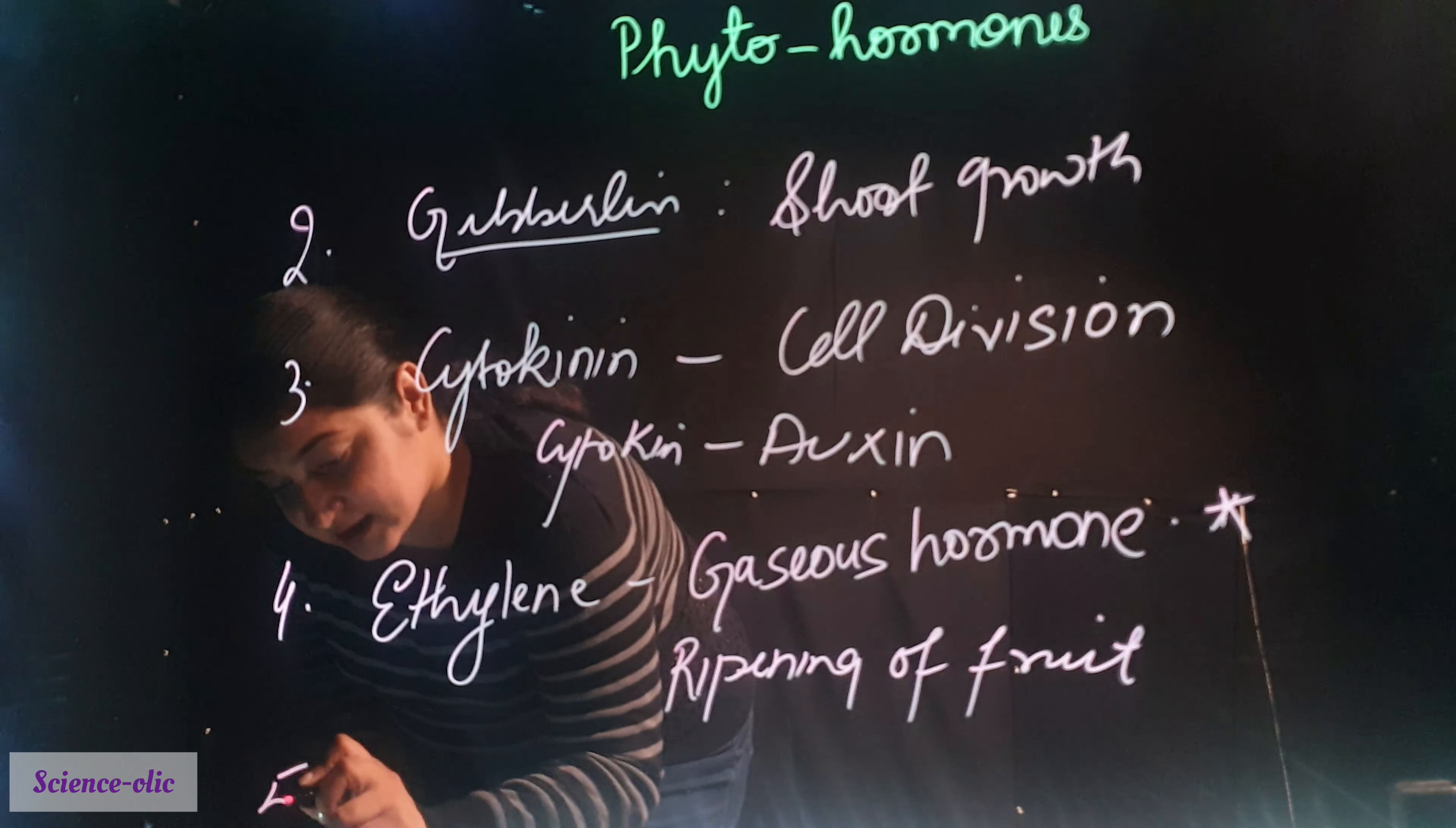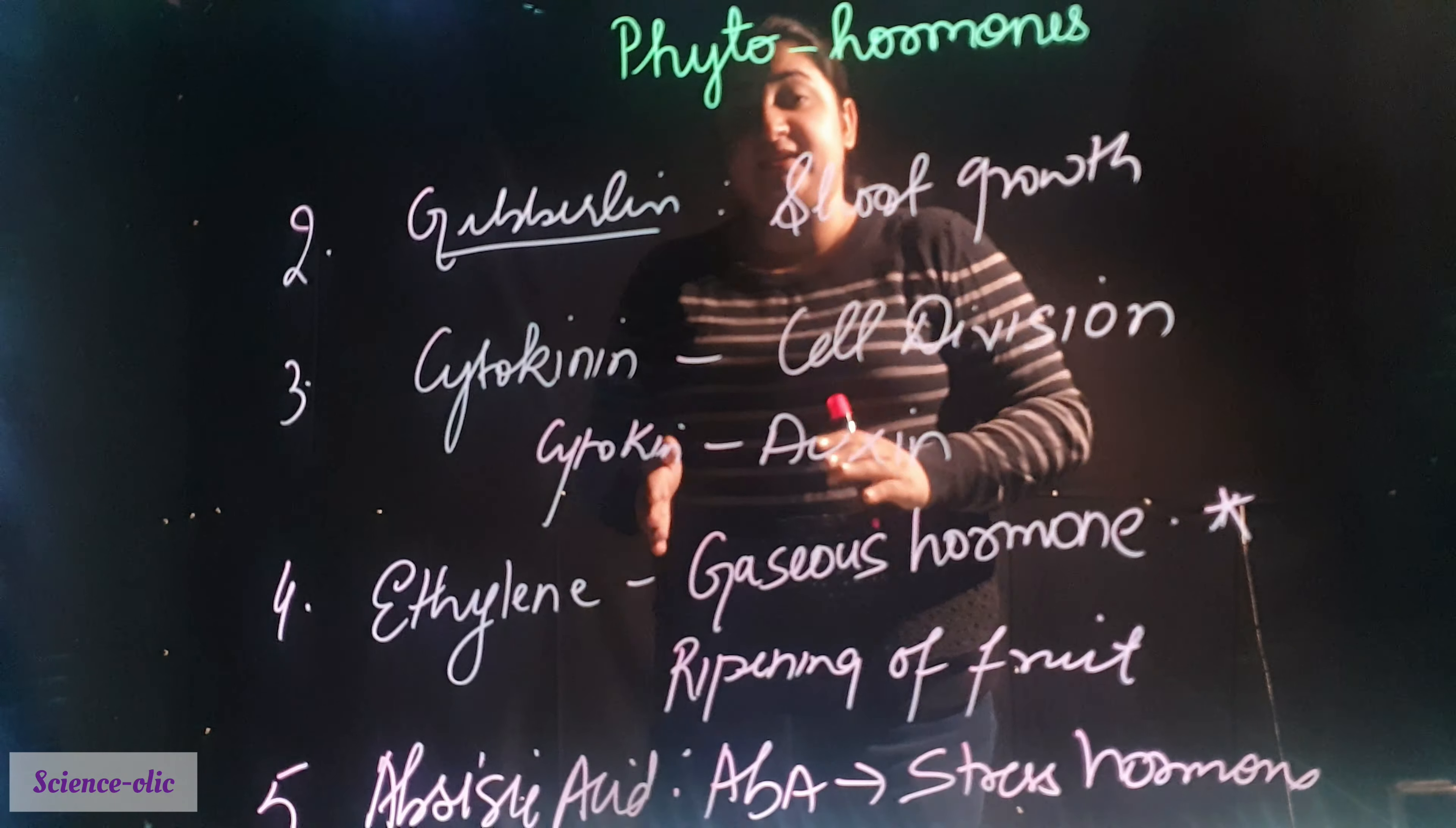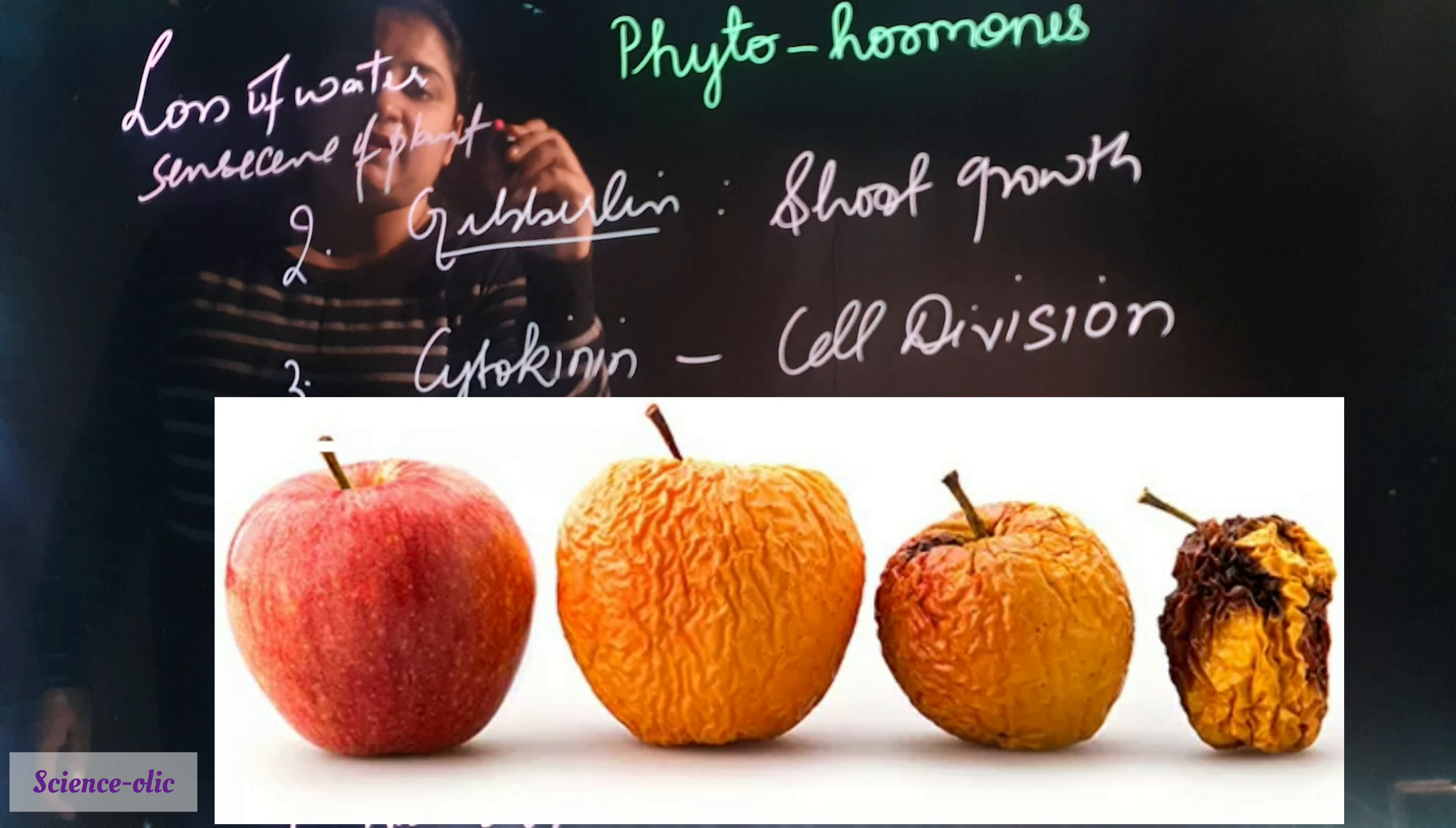The next is abscisic acid, or it is also known as ABA, or stress hormone. It is known as stress hormone. It helps or performs its function when there is dehydration in plant. There is loss of water in plants. Then the abscisic acid performs its function. It also helps in senescence of plants, means aging of plants.